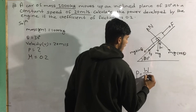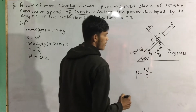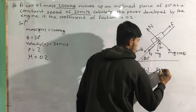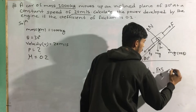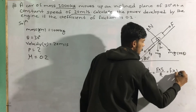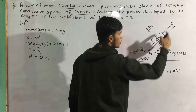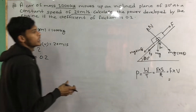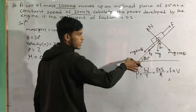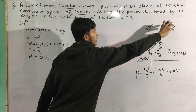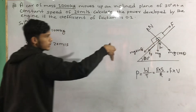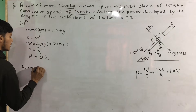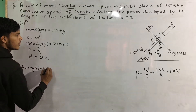Power equals work done divided by time taken. Work done equals force into displacement. Therefore, power equals force into displacement divided by time, which equals force into velocity.